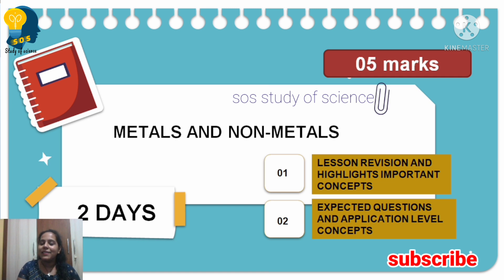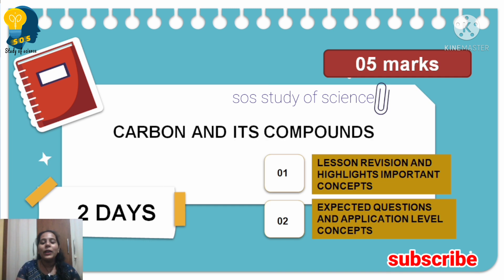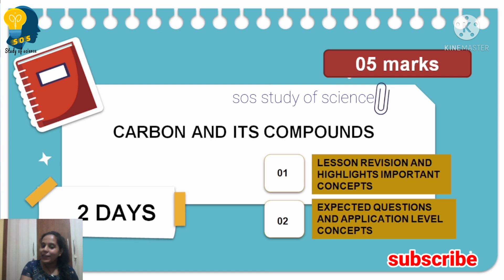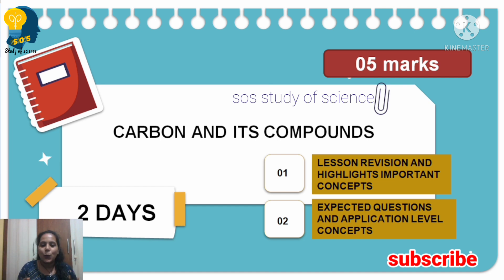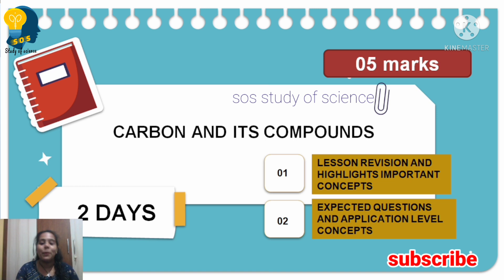Metals and Non-Metals carries 5 marks — one day for revision, one day for analyzing and knowing expected questions. Moving to Carbon and Its Compounds: it is very easy this year. You only need to know saturated and unsaturated hydrocarbons, formulas, structural formulas, and molecular formulas. Two days are allotted — five marks total. One day for revision, another day for analyzing questions and knowing what kind of question will come in the exam.